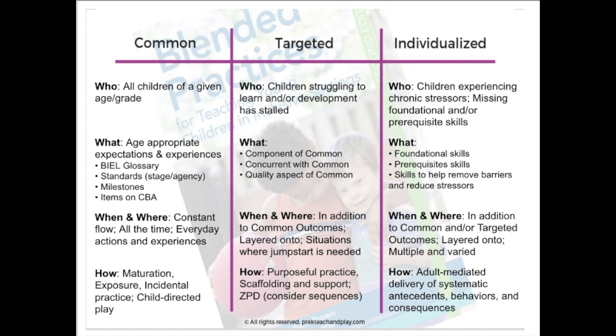When we think of common outcomes, we're thinking about what all children of a given age or grade are expected to learn. These should be age appropriate and also developmentally appropriate — meaning the older children are, the more variable development is. So we need a wide band or wide threshold of what is expected at a given age or grade. It should not be restricted to a 12-month period, especially for three-, four-, five-, six-, and seven-year-olds. That window should span two to three years for any given age. You might pull from state standards, developmental milestones, curriculum-based assessments, or the big ideas for early learning glossary.